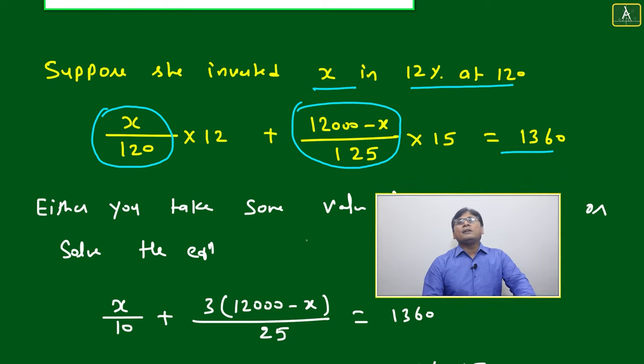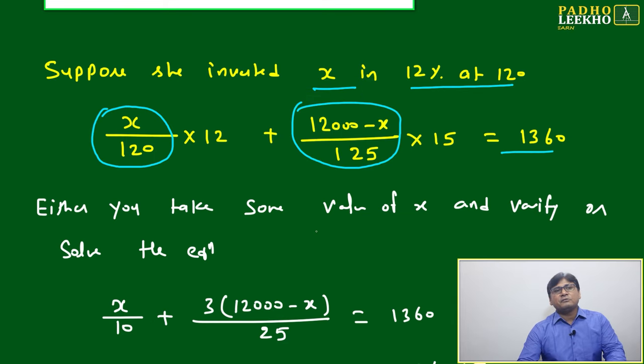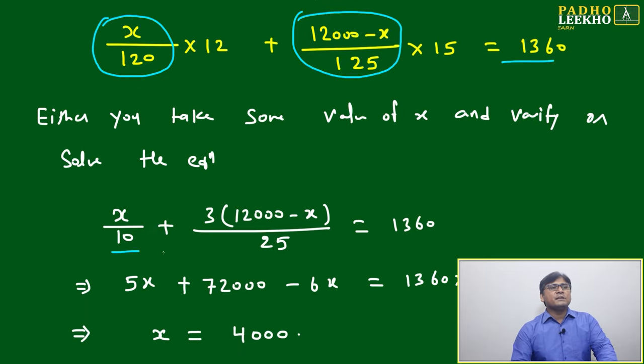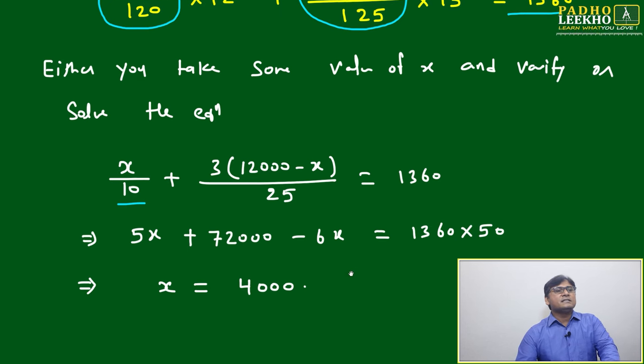Either you can take some random value like x equals 4,000 or 5,000 and solve it, or solve the equation in terms of x. X by 10, here it will be cancelled out, 12 will be cancelled. Simplify and solve.